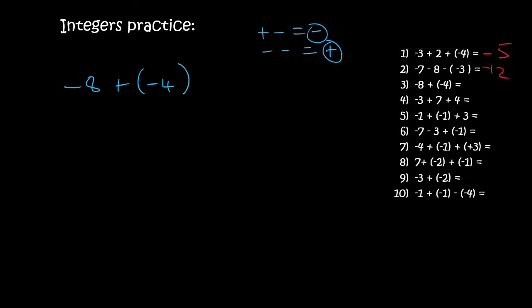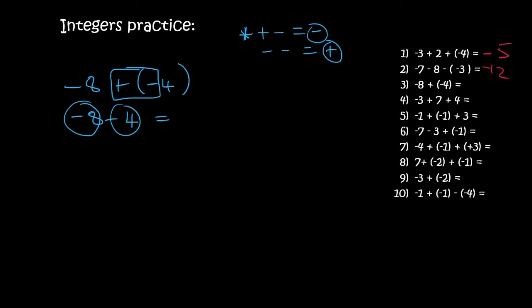Number three. Step one: get rid of all the brackets. A plus and a minus is a minus, so this becomes minus eight minus four. Imagine you have minus eight — you owe people eight rand — and then you've got another negative. You owe people eight rand, then you owe them another four rand, so you owe a total of 12 rand.